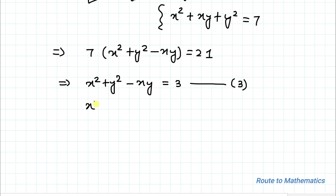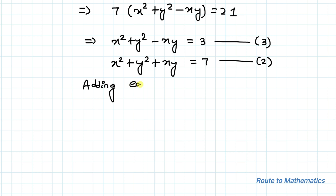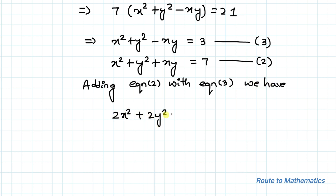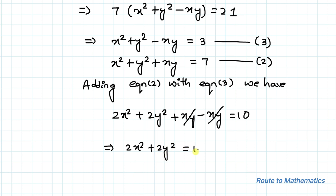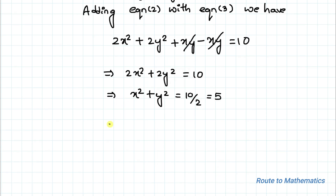From equation 2 we have x² + y² + xy = 7. Adding equation 2 with equation 3, we get 2x² + 2y² + xy - xy = 10. The xy terms cancel out, leaving 2x² + 2y² = 10. Taking 2 as common, x² + y² = 10/2 = 5.